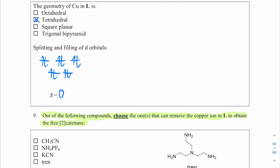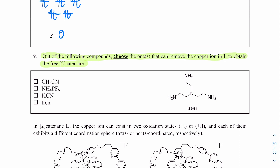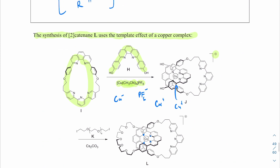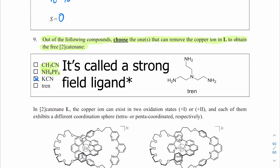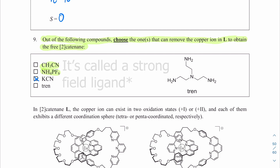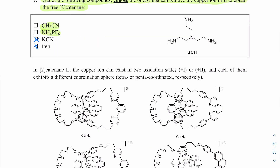Question nine: choose which compound can remove the copper ion from L to give a free two-catenane. We need complexing ligands stronger than pyridine. Acetonitrile is too weak, and the hexafluorophosphate ion similarly can't displace pyridines. We select potassium cyanide because cyanide is a very strong ligand. We also select tren — a triamine with four nitrogens — because regular amines are more nucleophilic than pyridine and bind more strongly to soft metals.